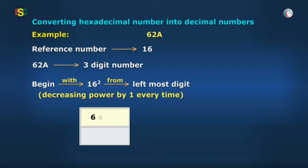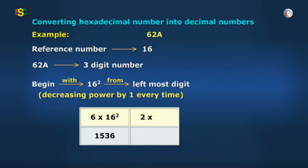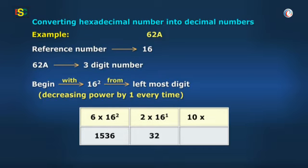So 6 multiplied with 16 to the power 2 gives 1536. 2 multiplied with 16 to the power 1 gives 32. A which is 10 multiplied with 16 to the power 0 gives 10.